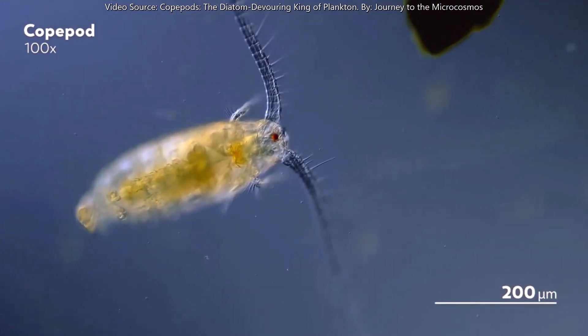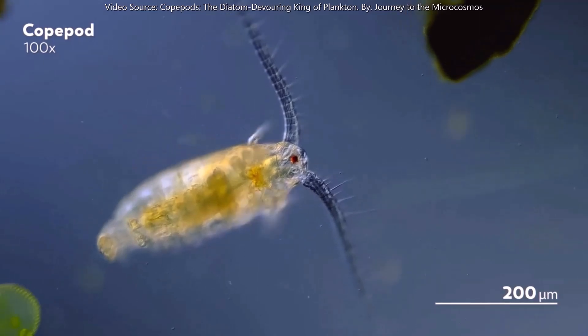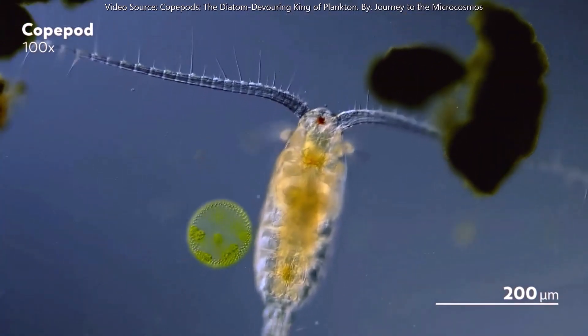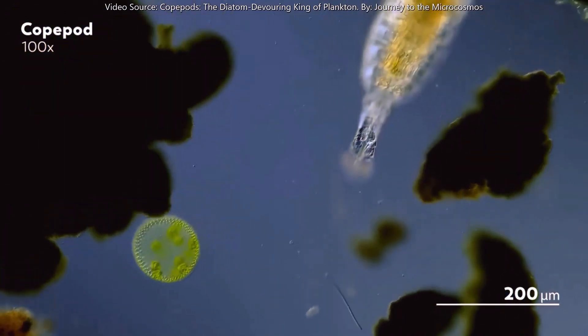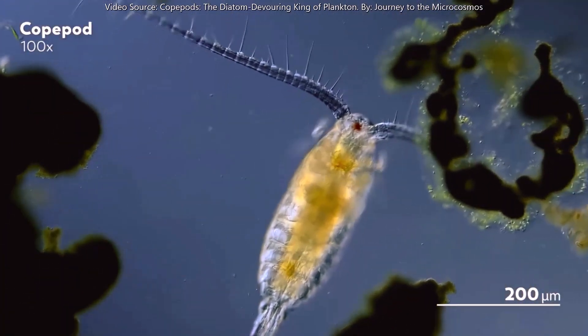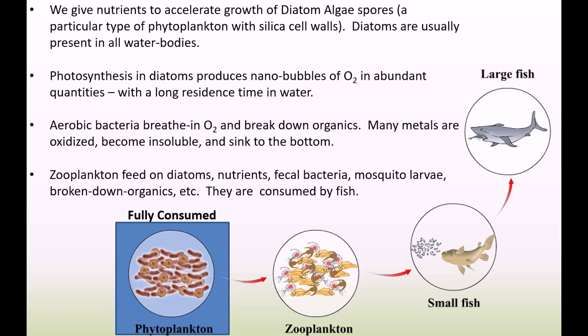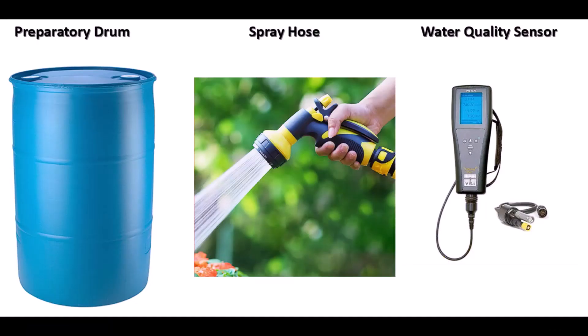The second remediating characteristic of zooplankton is that it also consumes the simpler organic compounds generated by the aerobic bacteria, so the pollution quantity also reduces. Furthermore, zooplankton consumes mosquito larvae, bacteria including pathogenic ones, and other forms of waste. The net result of this three-character driven story is that the treated water becomes smell-free, mosquito-free, largely free of pollutants and also much clearer.